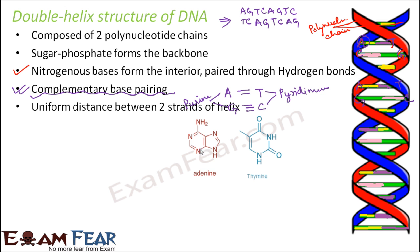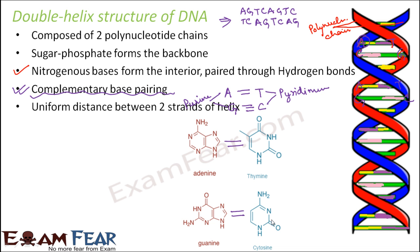Adenine and thymine pair up, and guanine and cytosine pair up. In both pairings, one side has a double-ring structure and the other has a single-ring structure. Even if cytosine and guanine swap sides, the slightly less space occupied by cytosine is compensated by guanine occupying slightly more space. Since every pairing always occurs between one purine and one pyrimidine, the distance between the two strands remains constant throughout the helix.